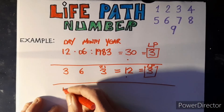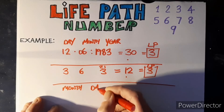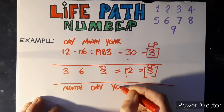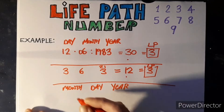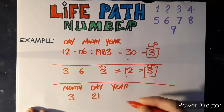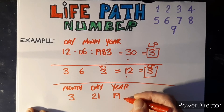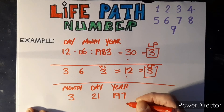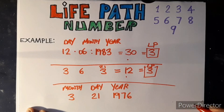We'll do this one in month, day, year format because not everybody does it the UK way. We'll go for the third month, the day will be the 21st — a solstice day — and the year will be 1976.